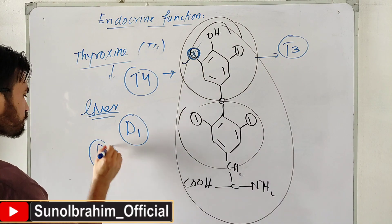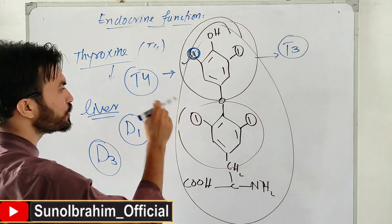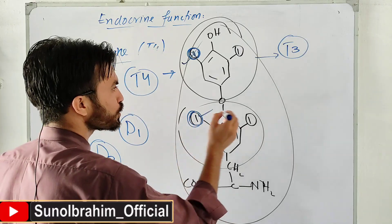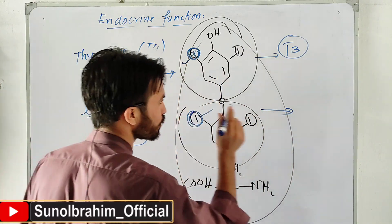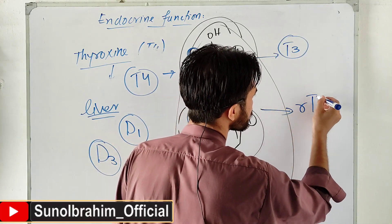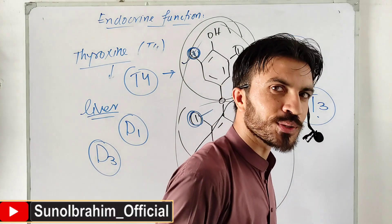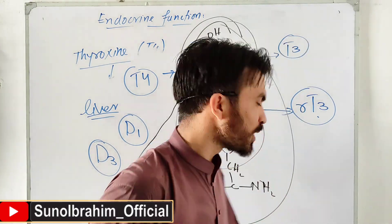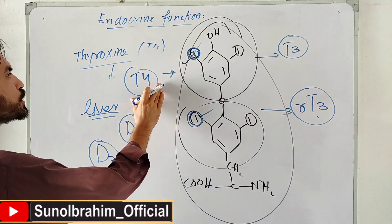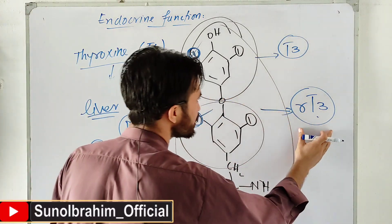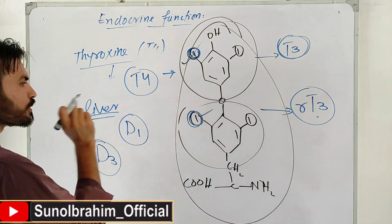There is also D3 deiodinase found in various tissues. D3 removes iodine from the inner ring instead, producing Reverse T3 (rT3), which is inactive. D3 causes deactivation rather than activation. So T4 becomes either active T3 (via outer ring deiodination by D1/liver) or inactive rT3 (via inner ring deiodination by D3).